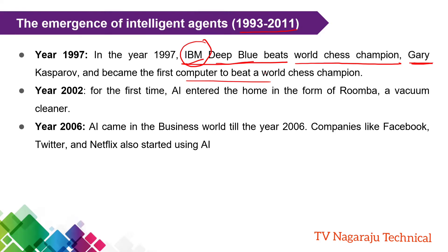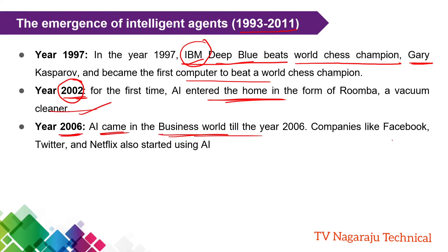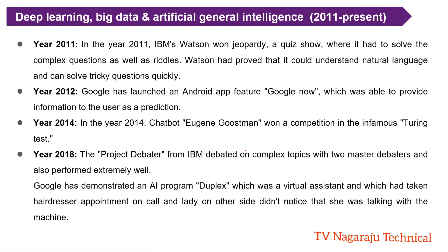At the same time, in the year 2002, artificial intelligence entered our homes — for example, in devices like vacuum cleaners. From this point, every common person came to know the term artificial intelligence. From the year 2006 onwards, artificial intelligence entered the business world, and companies like Facebook, Twitter, and Netflix also started using artificial intelligence.